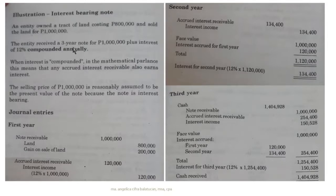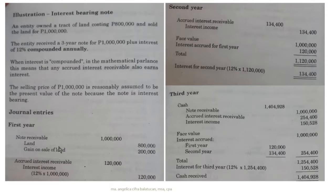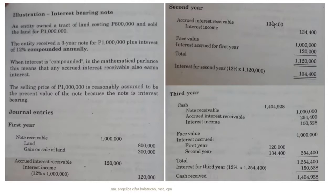For year two, no principal or interest payment has been received. We record another interest entry. The new principal is the original face amount of 1,000,000 plus the year one interest of 120,000 = 1,120,000. So 1,120,000 × 12% = 134,400. Entry: debit Interest Receivable 134,400; credit Interest Income 134,400.